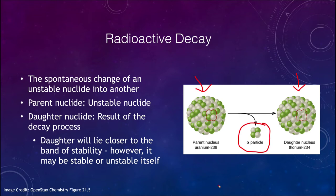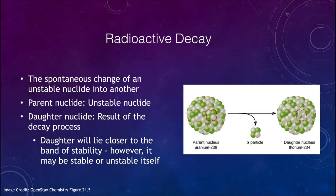What we find is that the daughter will be more stable than the parent in general. However, it does not mean that the daughter nucleus is stable — it just generally lies closer to the band of stability that we looked at previously. So it may be unstable and may not live as long as the parent, but in general it is working its way towards that line of stability.